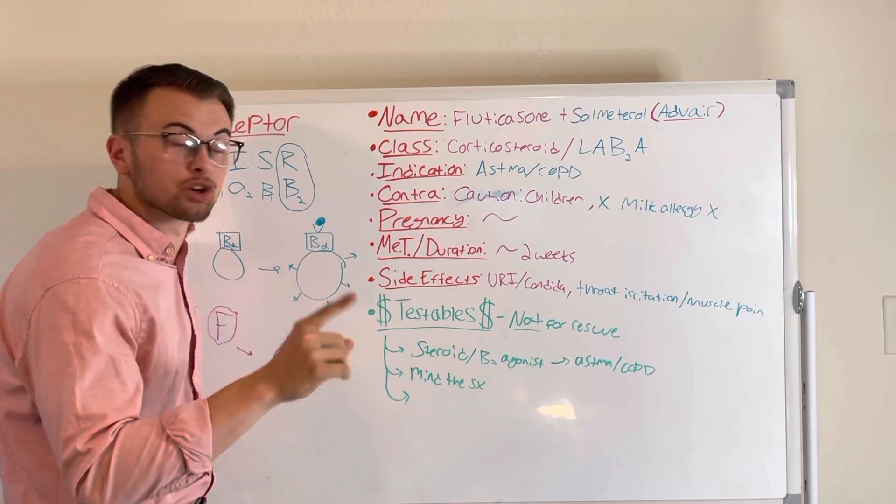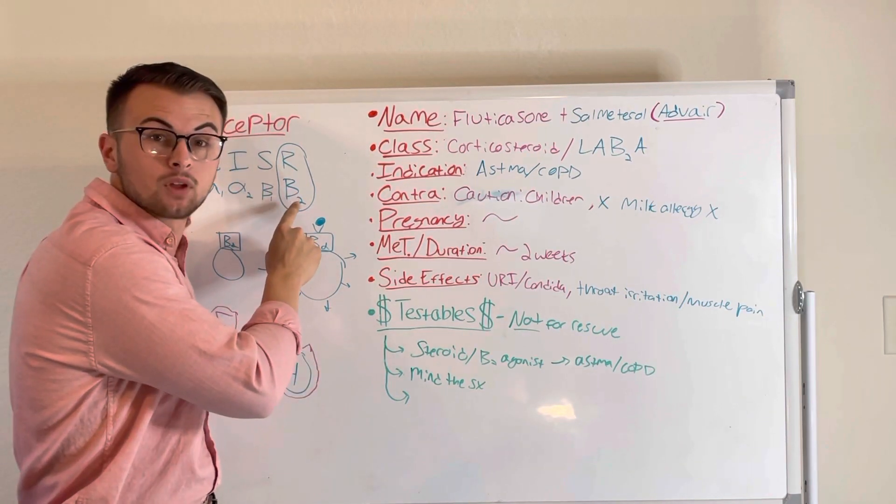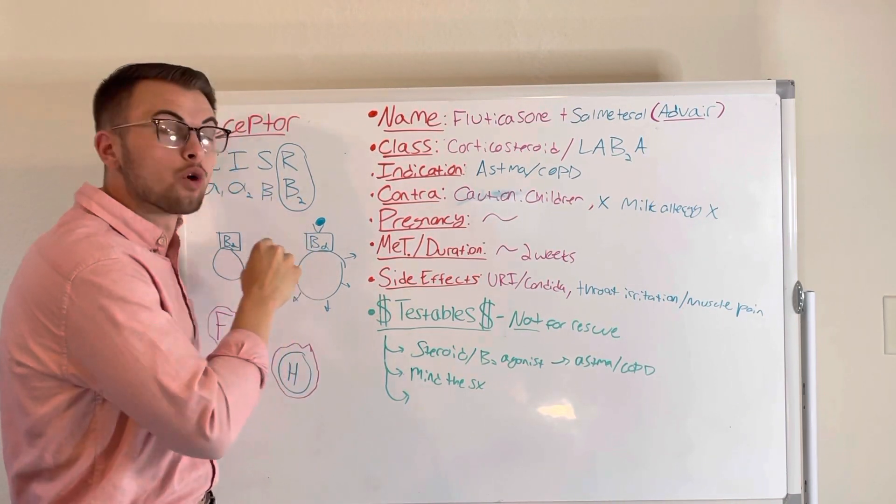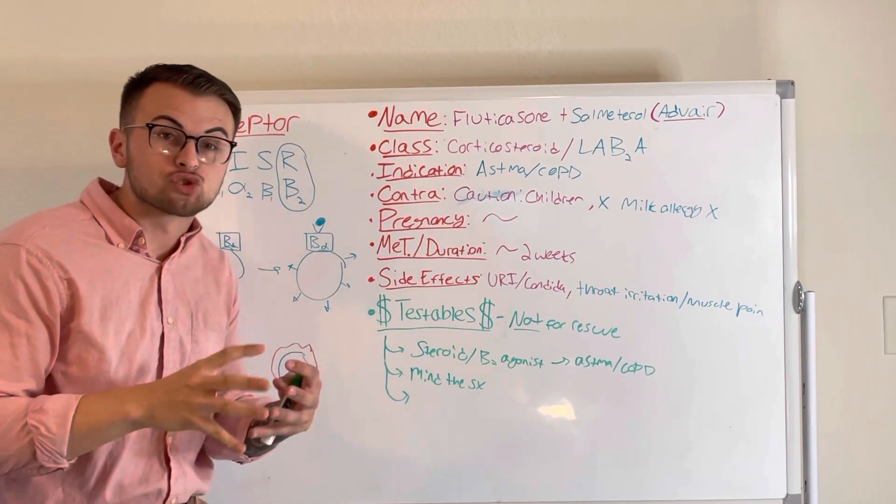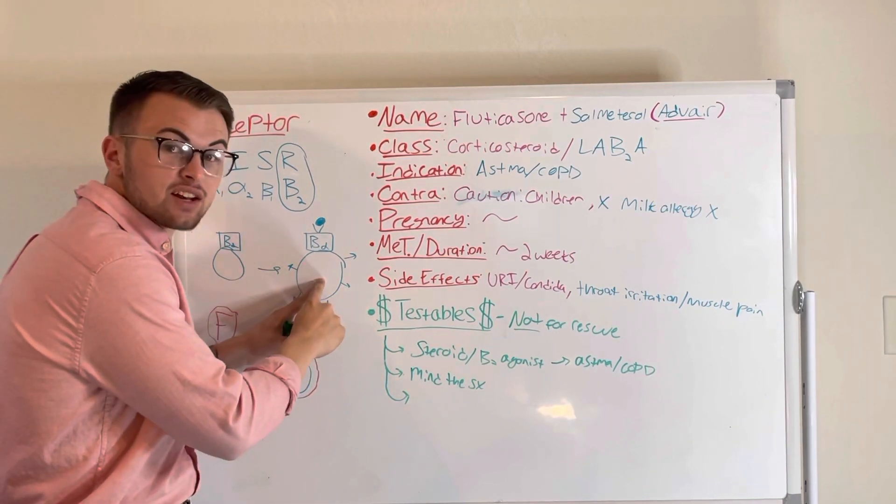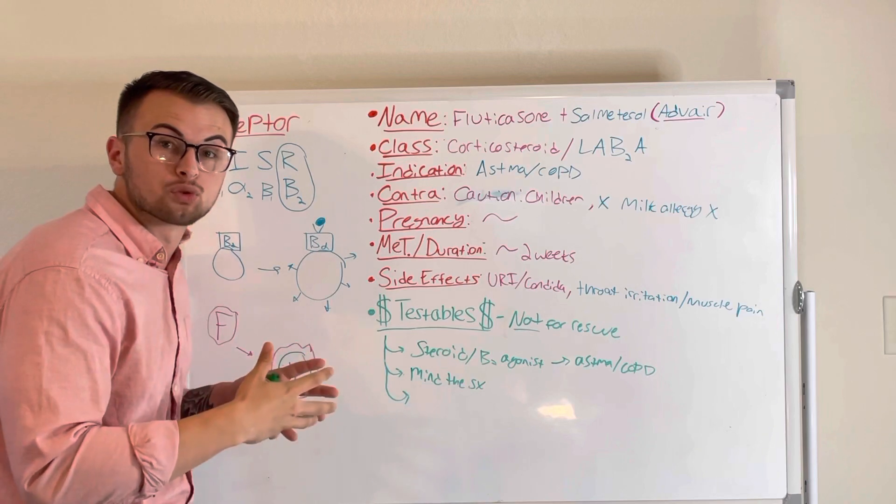Remember our SCISSOR acronym: beta-2 means relax. This drug will dilate the smooth muscle in our respiratory tree, which will open our airways and allow us to breathe easier.